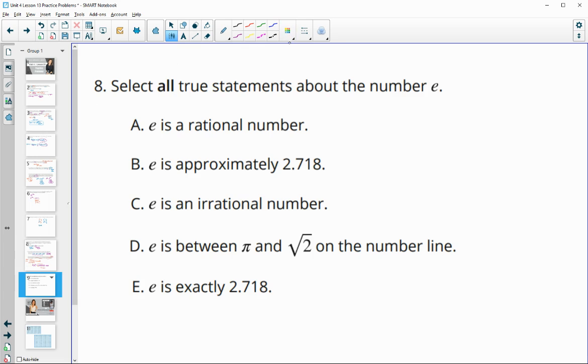Number 8, select all true statements about the number e. So e is a rational number. That's not true, because it never stops, and it never terminates. So it's like pi in that sense, that you could never write it all the way out. E is approximately 2.718. That's true. That's a decimal approximation. E is an irrational number. It absolutely is. E is between pi, which is approximately 3.14, and square root of 2 on a number line, and square root of 2 is about 1.41. So yes, 2.718, or e would be between those. So this is true. And then e is exactly 2.718. That's not true. It is not exactly 2.718. It is approximately 2.718.